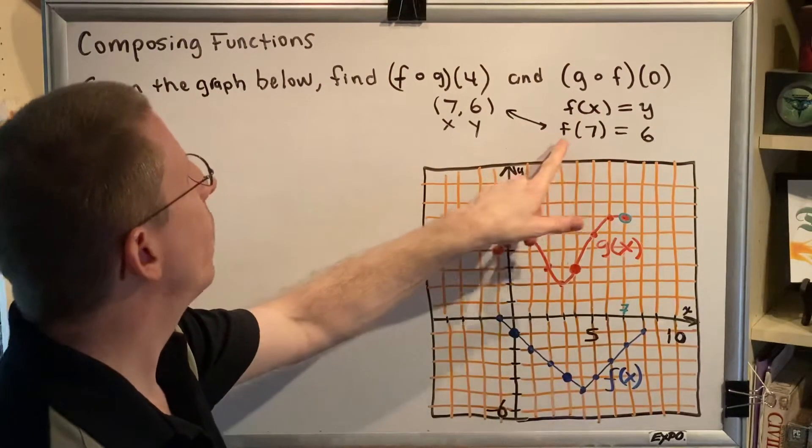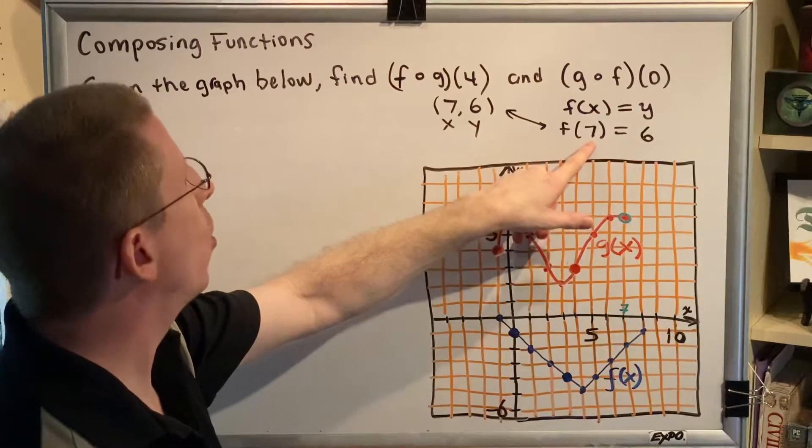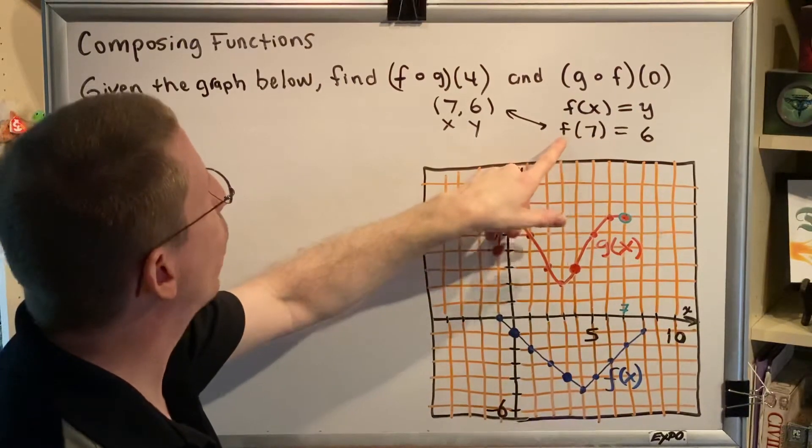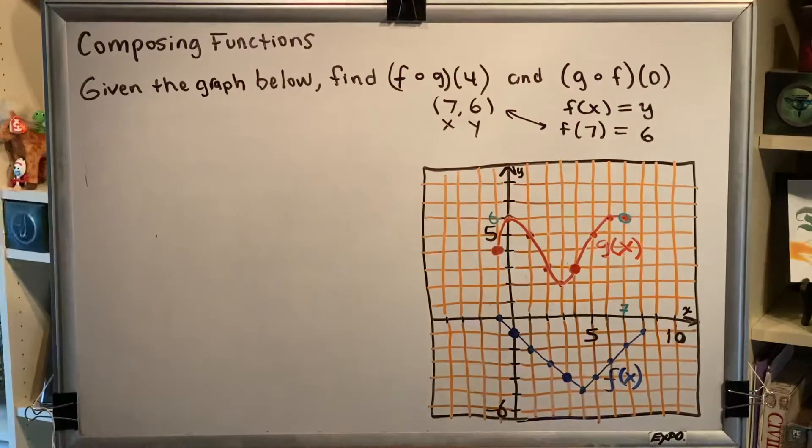When you see something like f of 7 equals 6, what that's saying is the x-coordinate is 7 and for function f, the y-coordinate is 6. Now let's go ahead and solve this two-part problem.